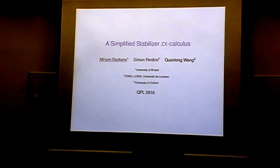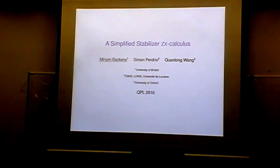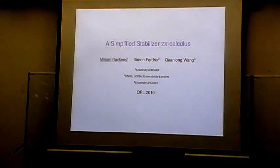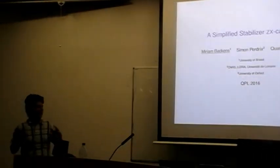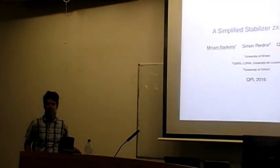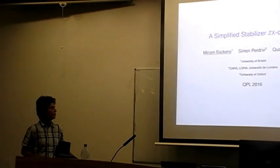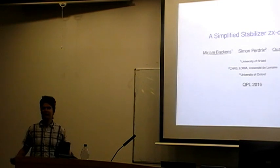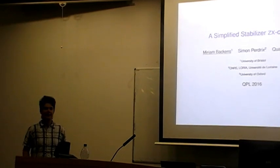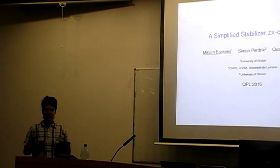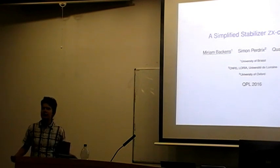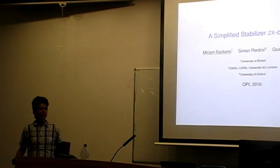The ZX calculus consists of red and green spiders that interact in specific ways, some of which we've just seen in the previous talk. In past years at QPL, I've generally talked about completeness results for the ZX calculus, where we've shown that the rewrite rules actually allow us to derive all equalities that we could also derive using matrices.